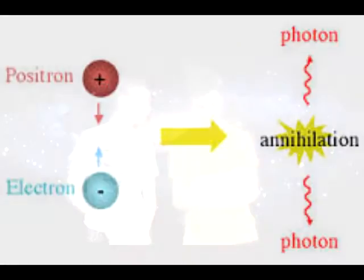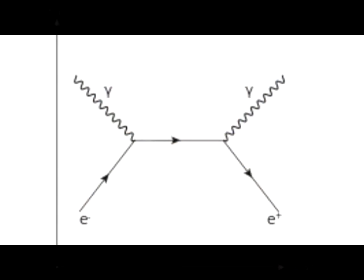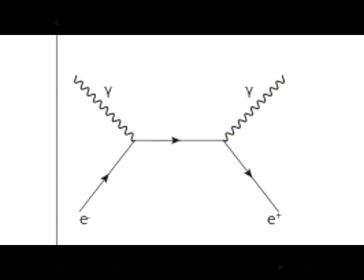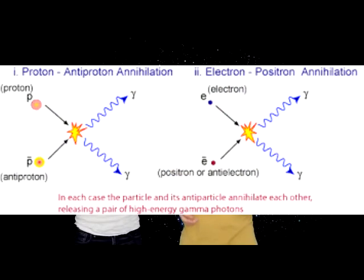When an electron and a positron collide it forms two photons of gamma radiation — gamma radiation which has energy. But what about when a proton collides with an antiproton? Not so simply — this is a bit more complicated. Very simply, they release much more energy than the low levels that electron annihilation does.